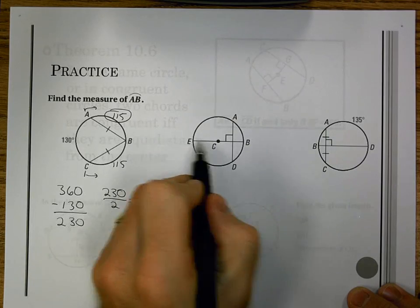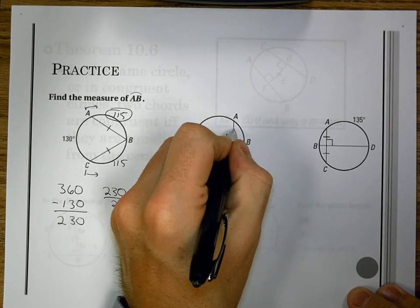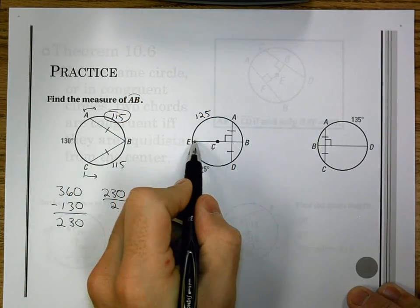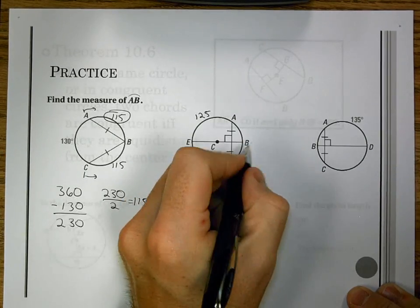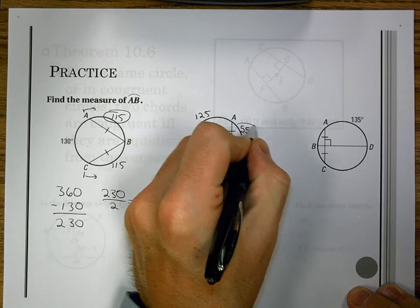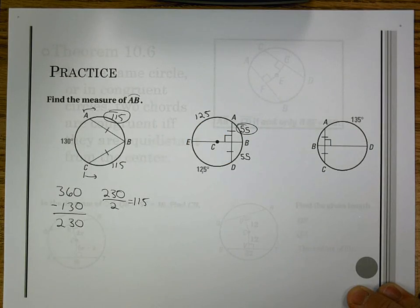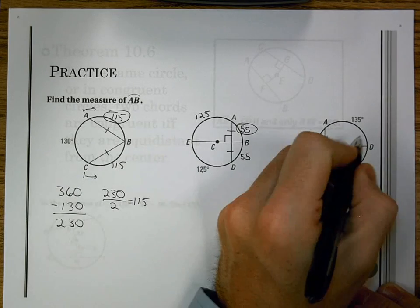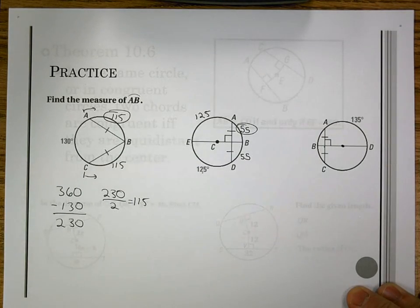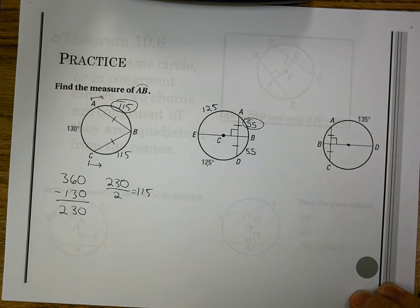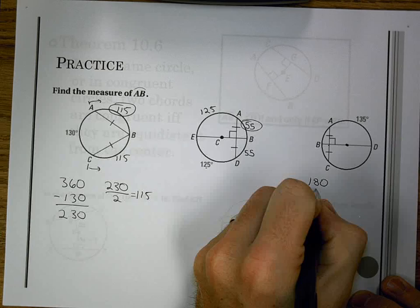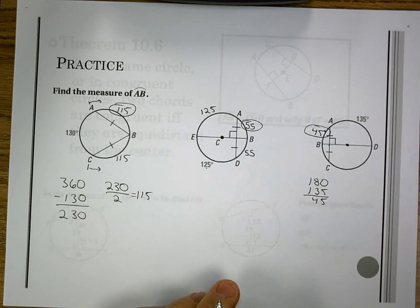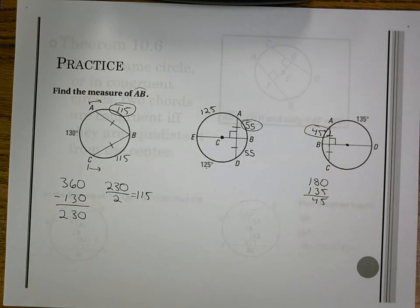Second one. I have a diameter. It's perpendicular to a chord. That means it bisects, which means if this is 125, so is this. And then since I have a diameter here also, I know the bottom half is 180, which would make that 55, as well as the top 55, and there's AB, the one we were looking for. And then our last one. This is perpendicular bisector to this chord. That means it's a diameter, BD. Since it's a diameter, we know it cuts the circle in half. So now to find AB, it's 180 minus 135, which is 45 degrees.